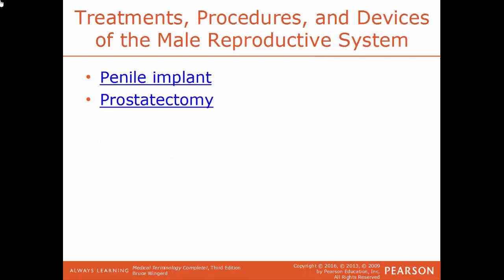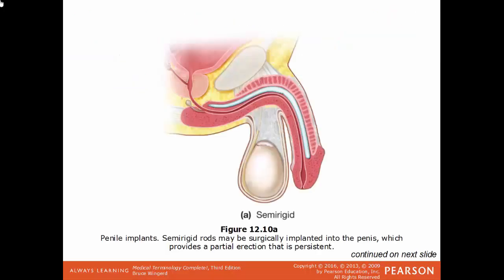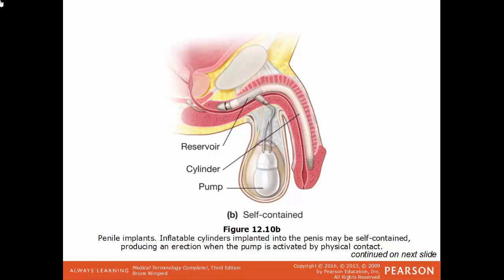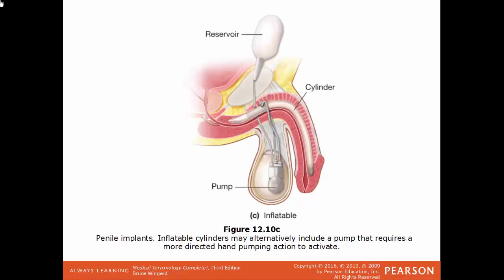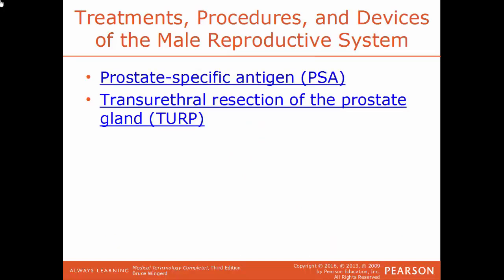Penile implant: some type of prosthesis is inserted into the penis, usually done for males who have erectile dysfunction. Prostatectomy is a surgical removal of the prostate gland. In this illustration, we have an example of a penile implant. A flexible tube is inserted into the shaft of the penis, providing a partial erection. Another type includes an inflatable cylinder — when a pump is activated, that causes the penis to become erect. PSA, prostate specific antigen, is an enzyme produced by the prostate in very high concentration found in the blood of men with prostate cancer — checking PSA levels is a quick blood test to check for the possibility of prostate cancer.